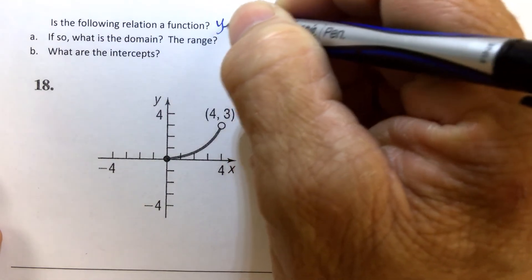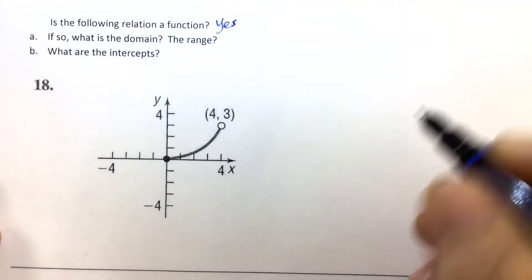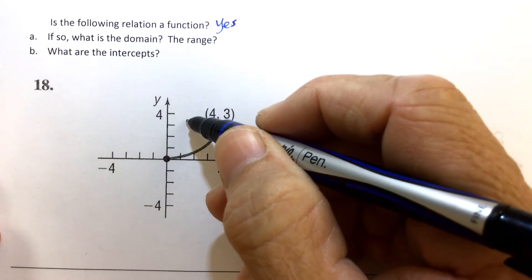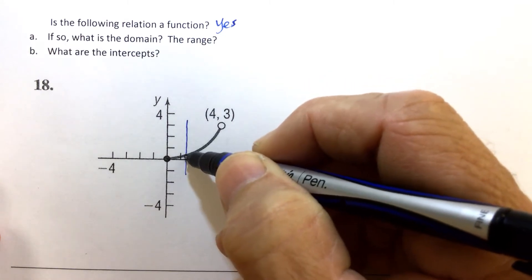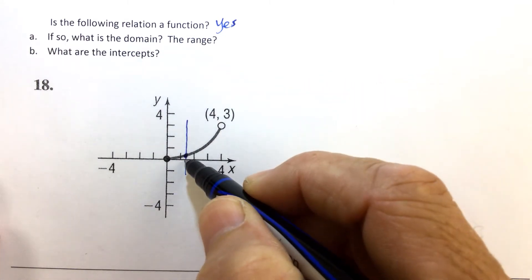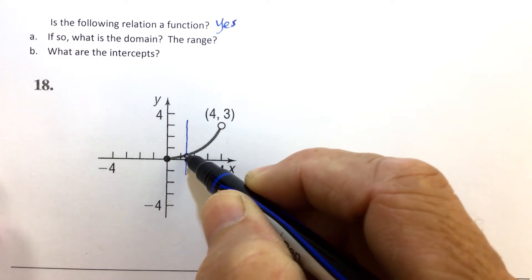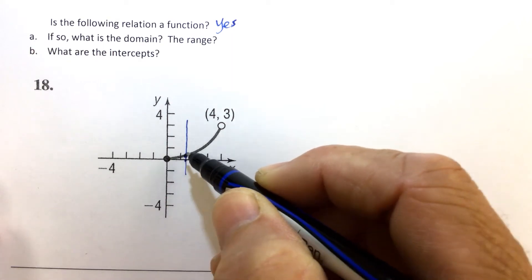So yes, this is a function. What does that mean? Well, if a vertical line hits the graph at one point maximum, then for each x-coordinate, there's exactly one y-coordinate assigned to it.